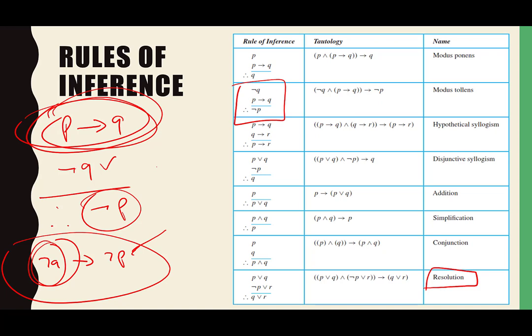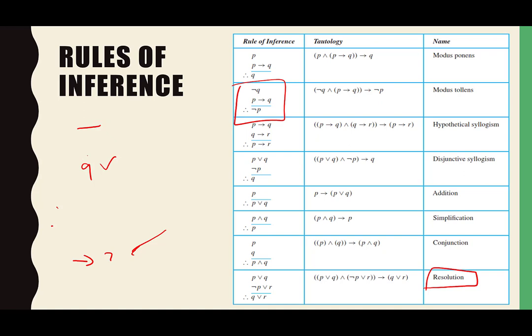You can logic your way through every one of these and prove to yourself that they are true. Plug them into truth tables if you want — they all pan out. Look at the disjunctive syllogism: P or Q is true, not-P is true, therefore Q has to be true. In order for P or Q to be true, one of those two has to be true — I've told you P is not true, so Q must be the true one.